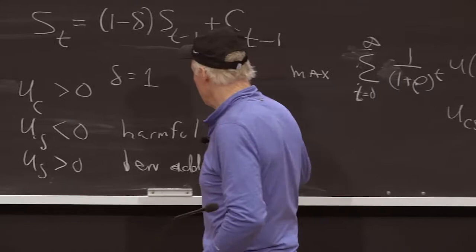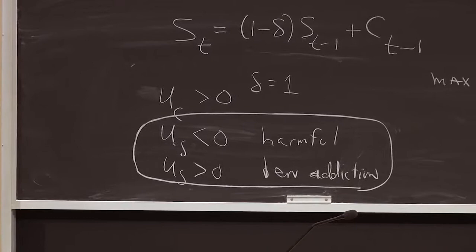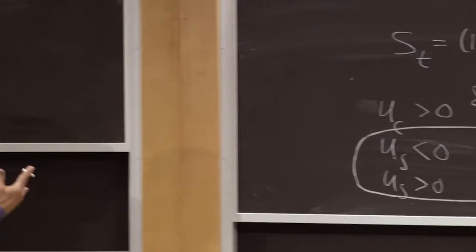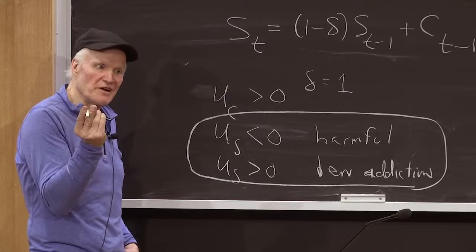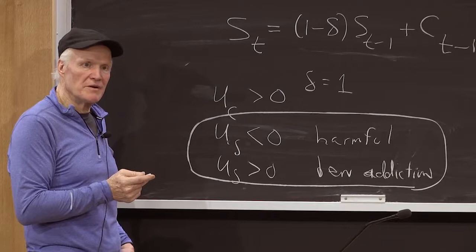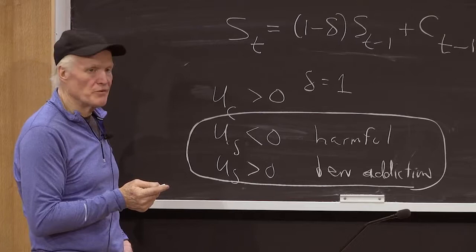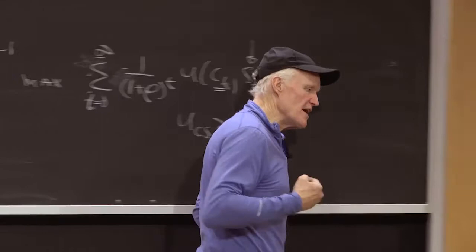But it turns out addiction doesn't have much to do with this sign of this. That is, the sign in this term isn't really about addiction. Because in general, in economics, what really matters in a model like this is the cross-derivatives. That is, how marginal utilities are affected. But what is the marginal utility of consumption in a model like this? What would be the effect of an extra unit of consumption today on your discounted lifetime utility?